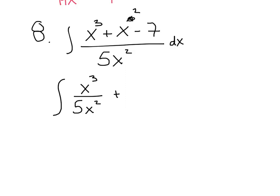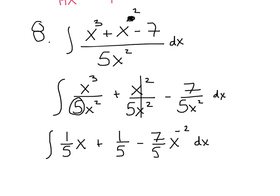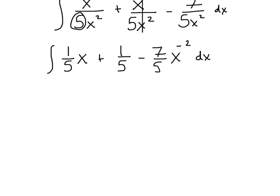So I've got x squared over 5x squared, minus 7 over 5x squared, dx. Simplifying: the 5 is on the bottom, so that's 1 fifth x, plus 1 fifth — those cancel — minus 7 fifths times x to the negative 2, dx. Now ready to integrate: adding 1, I get x squared over 2 times that fifth, plus 1 fifth x.